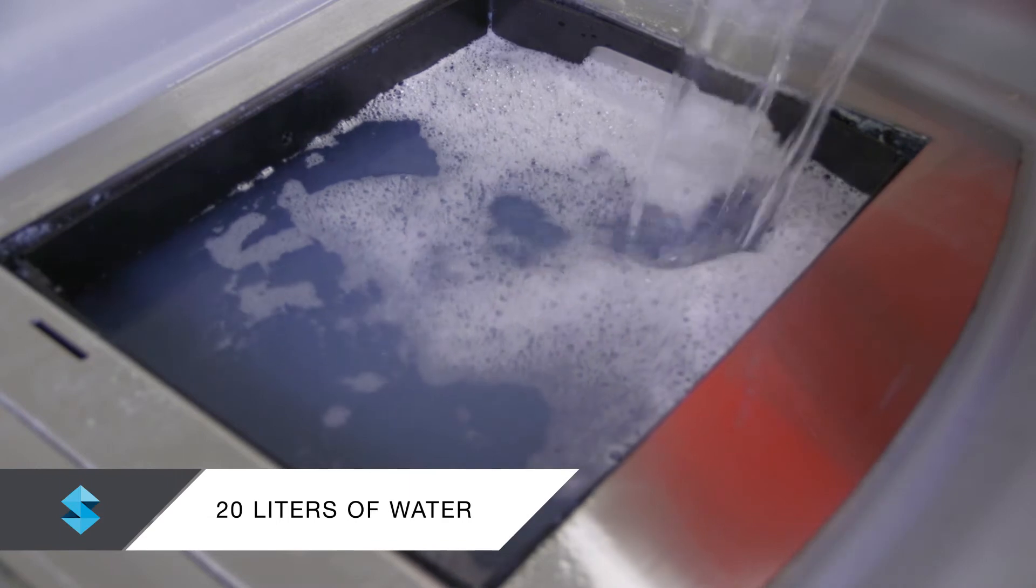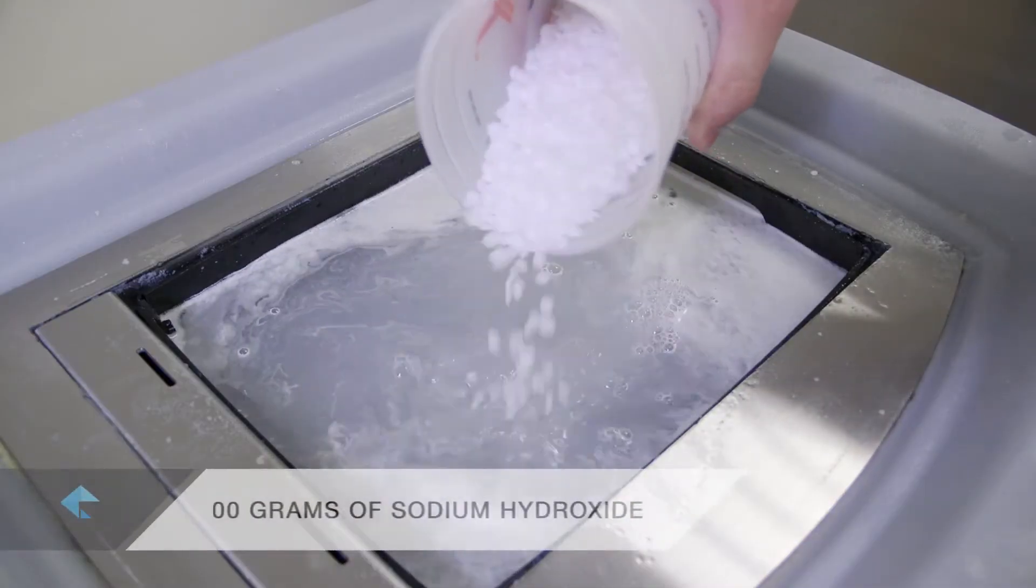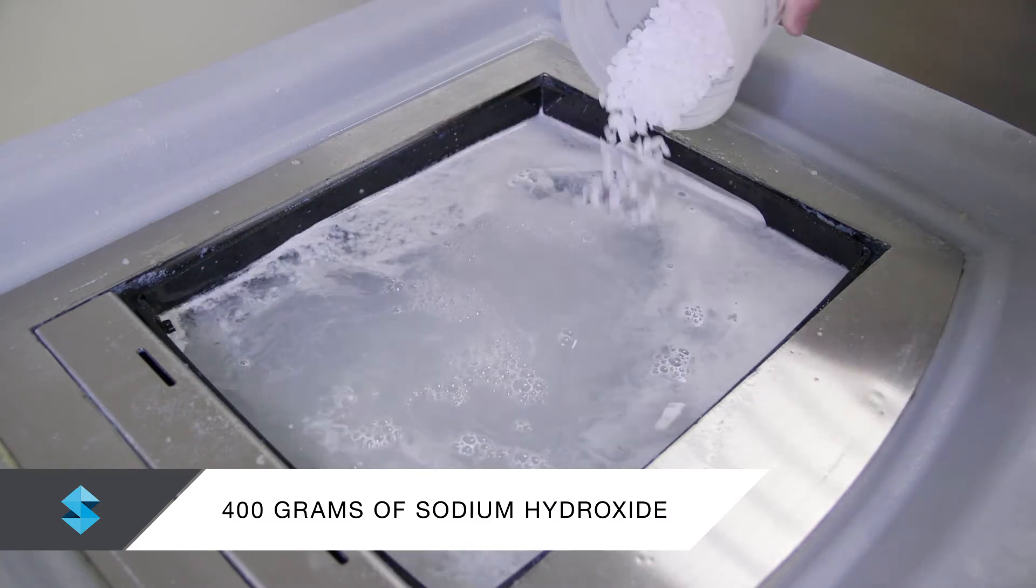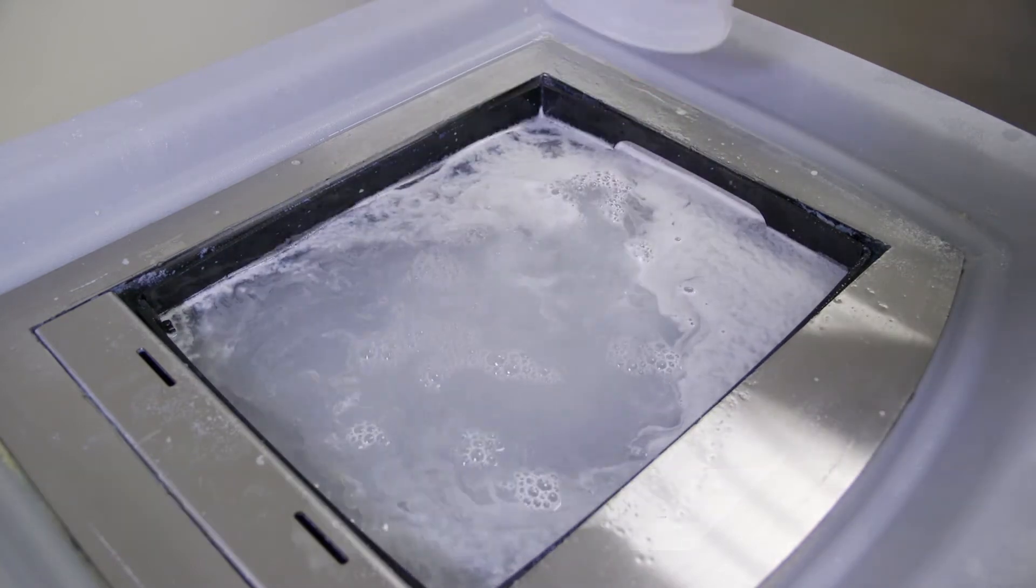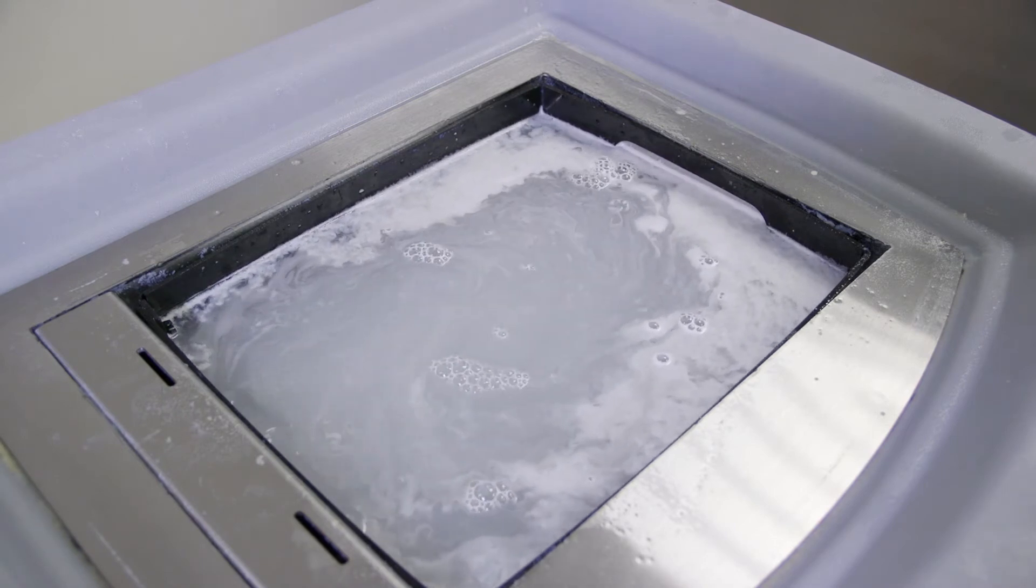To mix the solution, make sure the tank is clean, then add 20 liters of water. Operate the circulation device and slowly pour 400 grams of sodium hydroxide into the tank. Continue mixing the solution until the sodium hydroxide is completely dissolved.